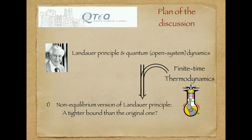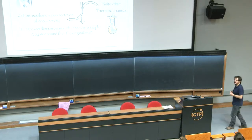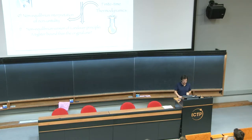The goal is to provide a non-equilibrium version of Landauer's principle. We want to use the framework for non-equilibrium dynamics and non-equilibrium thermodynamics that we have introduced so far to justify Landauer itself. In passing, we will also see how it is possible to actually improve Landauer's original formulation. A by-product of our discussion will be the identification of the role of unitality, a very special feature of open system dynamics, in this non-equilibrium framework for thermodynamics.